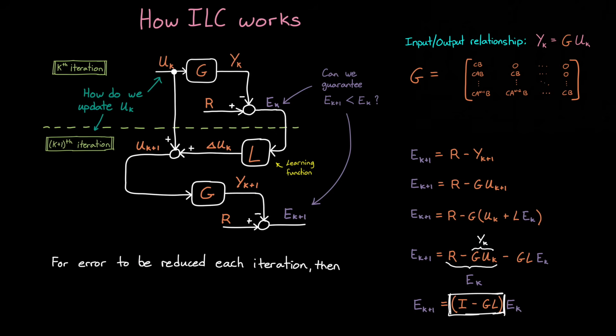And the important part of this equation is this i minus gl part, because for the error to be reduced, then the magnitude of i minus gl must be less than 1. And that makes sense, right? We'll always be multiplying the error by a number less than 1,